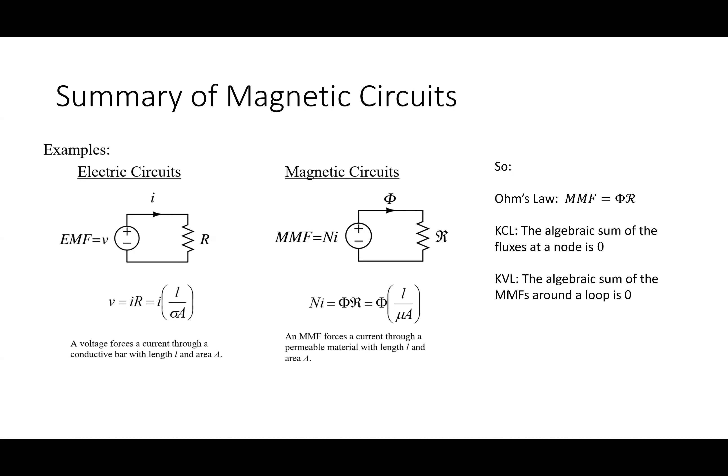Magnetic circuits become hard only because of plus and minus signs, meshes, and nodes — but basically there are just three things: Ohm's law, KCL, and KVL. Ohm's law here says the MMF equals phi times reluctance. KCL says the sum of fluxes into a node is zero, and KVL says the sum of MMFs around a loop is zero.